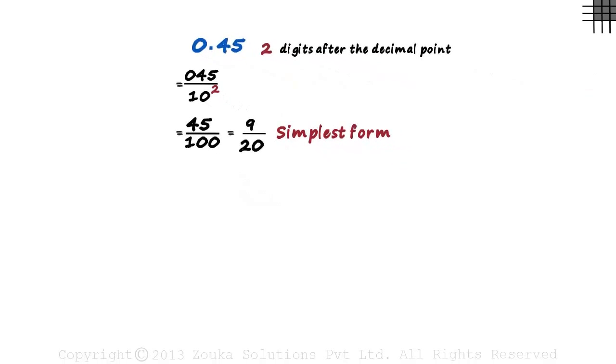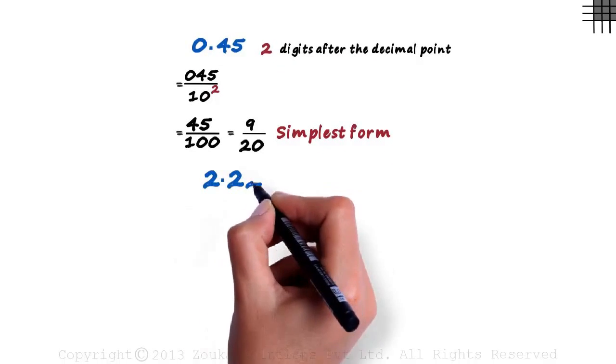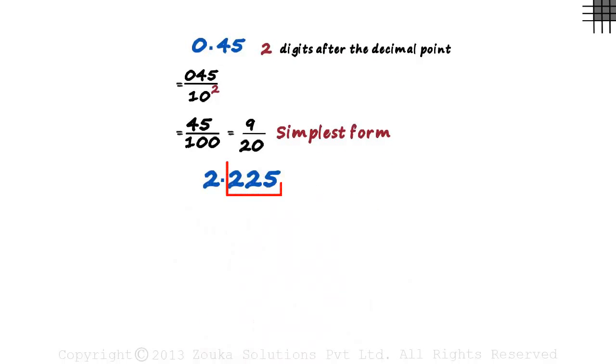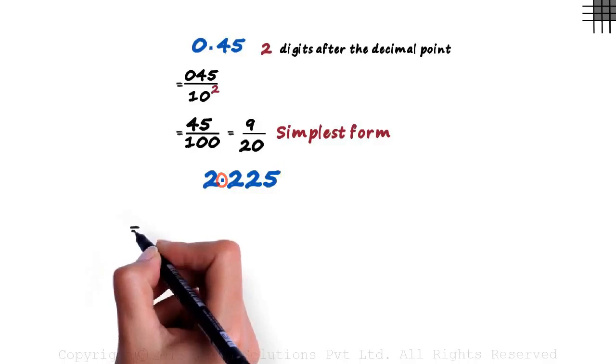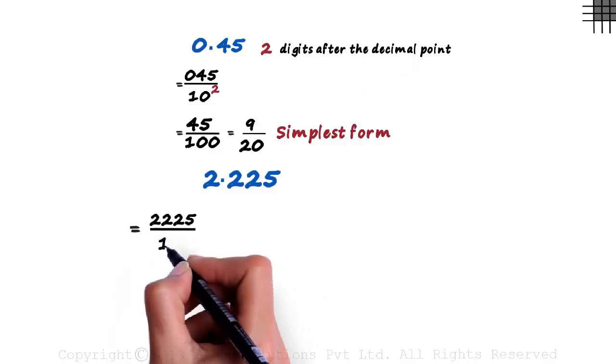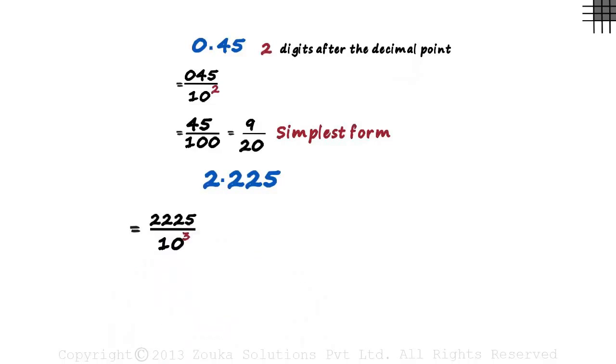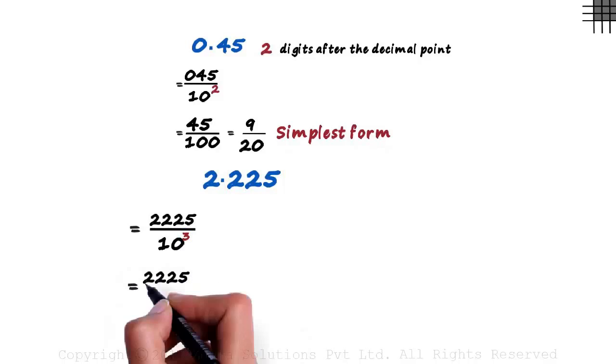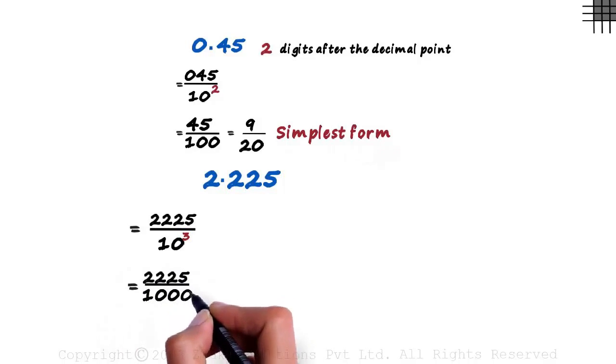Here's another example, 2.225. It has 3 digits after the decimal point. So first we write the number without the decimal. It will be 2225 and divide it by 10 raised to 3. We write 3 as the power of 10 since we have 3 digits after the decimal point.